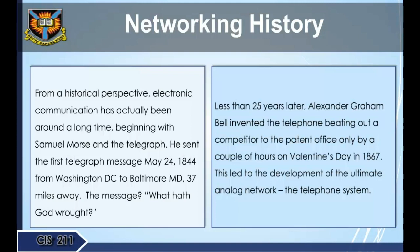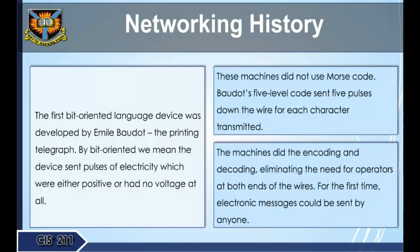This led to the development of the ultimate analog network: the telephone system. The first bit-oriented language device was developed by Emil Baudot — the printing telegraph. By bit-oriented, we mean the device sent pulses of electricity which were either positive or had no voltage. Baudot's 5-level code sent five pulses down the wire for each character transmitted. The machines did the encoding and decoding, eliminating the need for operators at both ends, so electronic messages could be sent by anyone.